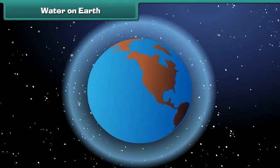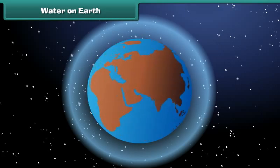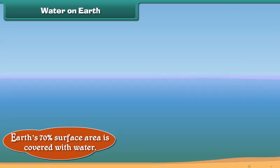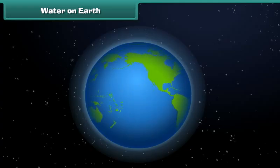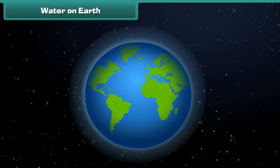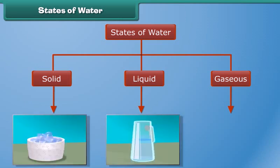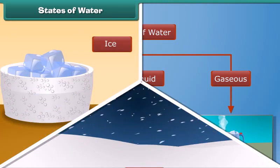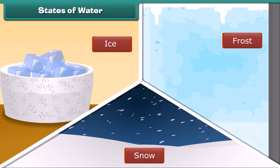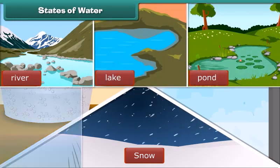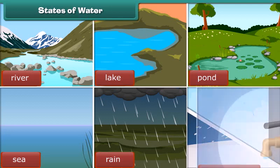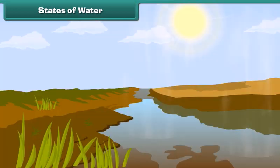Water is the most abundant substance present on the earth. In fact, our earth's 70% surface area is covered with water. Earth is also called a blue planet because when seen from space it appears blue due to water. Water exists in three states: solid, liquid and gaseous. Ice, snow and frost are examples of water in the solid state. You see liquid water in rivers, lakes, ponds, sea, when it rains, and from a tap. Water vapour is a gas in the air — you can't see it because it is invisible.